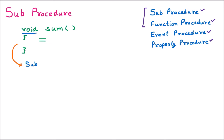We provide the name of the procedure, which is sum. If no arguments are passed, the brackets are empty. In .NET, curly brackets are not used. To make the block, we use End Sub — so sub ends with End Sub. Inside, we have certain statements, which remain as-is. So we have converted the C programming procedure into .NET.